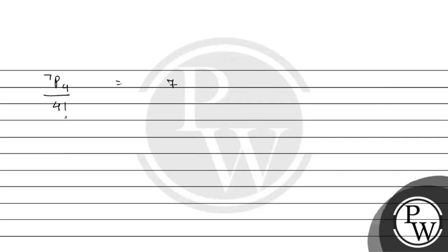So this will be equal to 7 factorial upon 7 minus 4 factorial upon 4 factorial. This is equal to 7 factorial upon 3 factorial upon 4 factorial. So this can be written as 7 factorial upon 3 factorial multiply by 4 factorial.